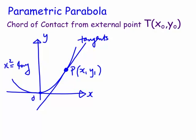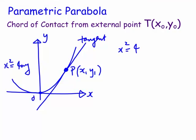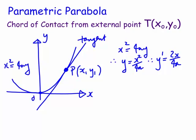Its equation we know is y equals px minus ap squared — that's the parametric one — but we actually want the Cartesian equation. We know x squared equals 4ay, therefore y equals x squared on 4a, therefore y dash equals 2x on 4a, or just x on 2a. That is the gradient function for the curve in terms of its Cartesian coordinates.